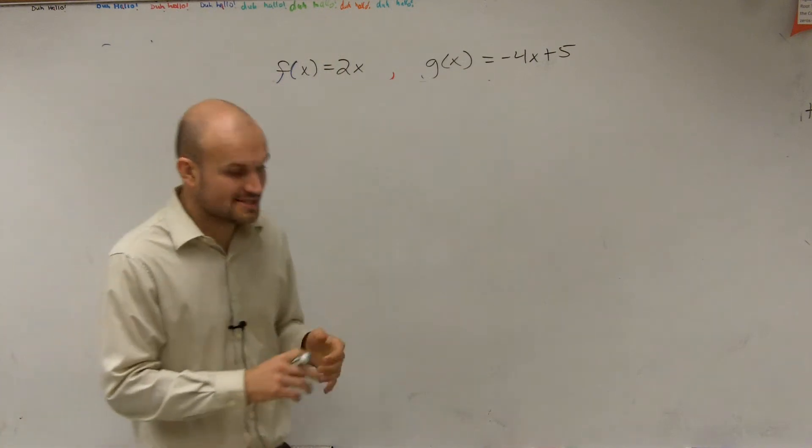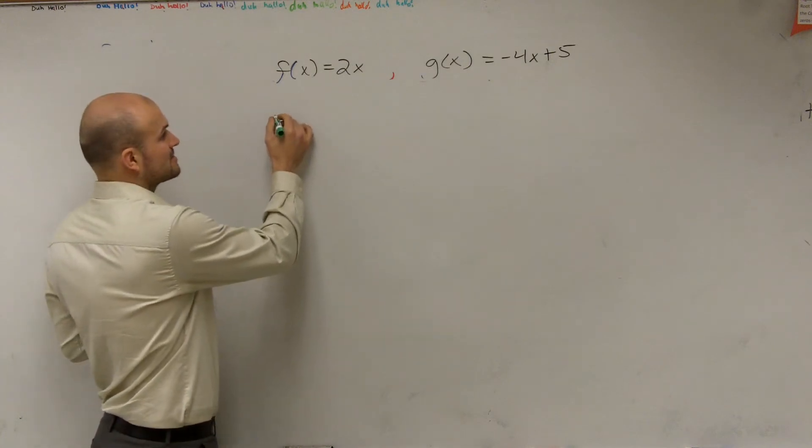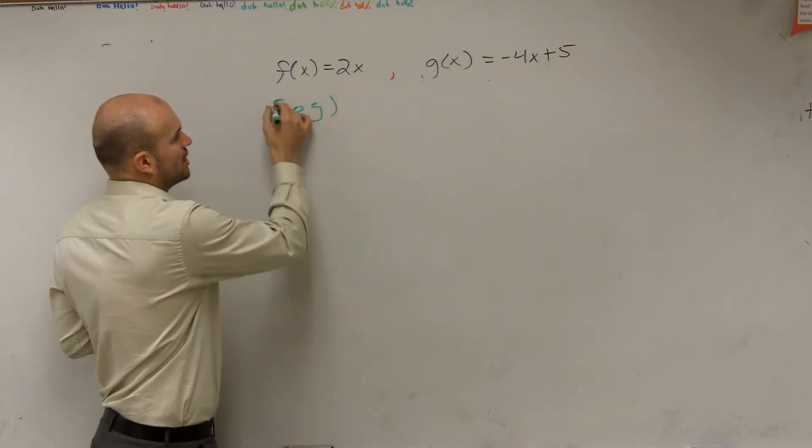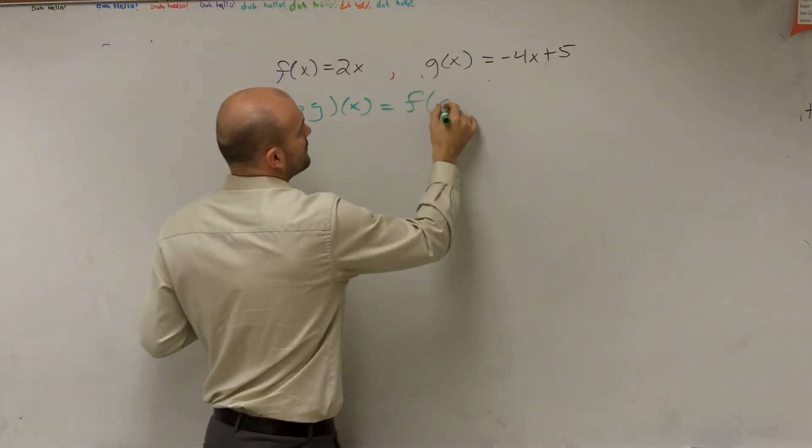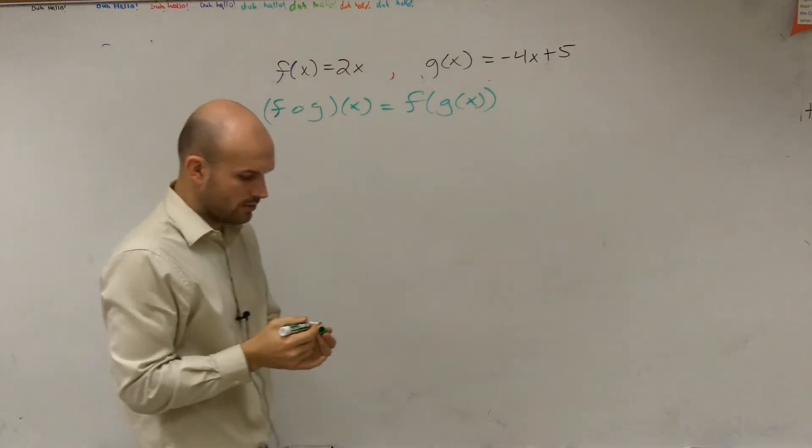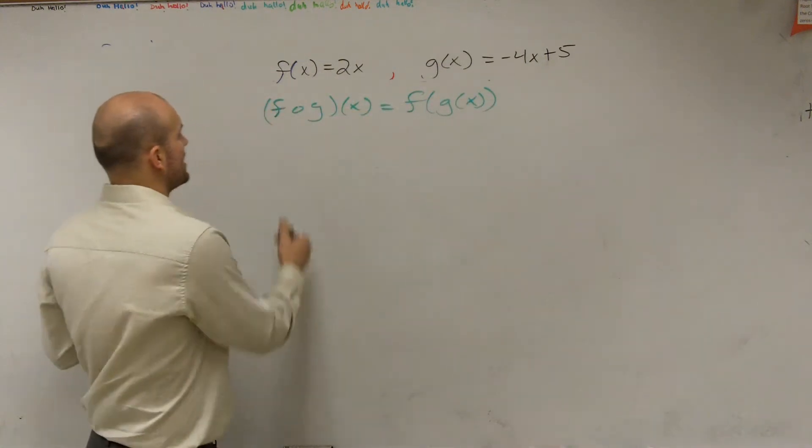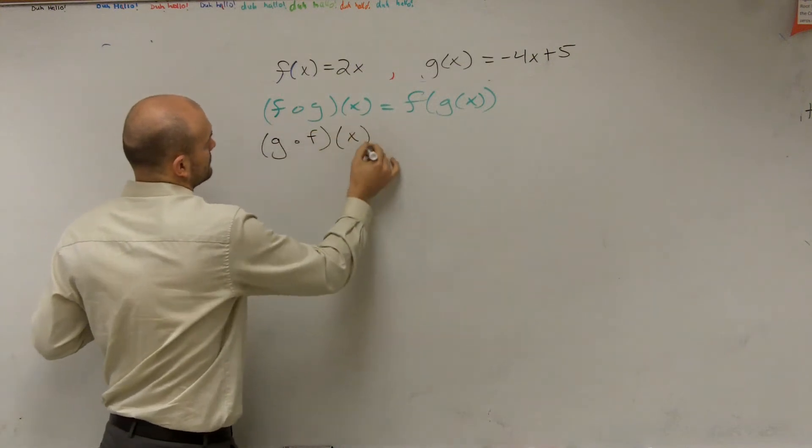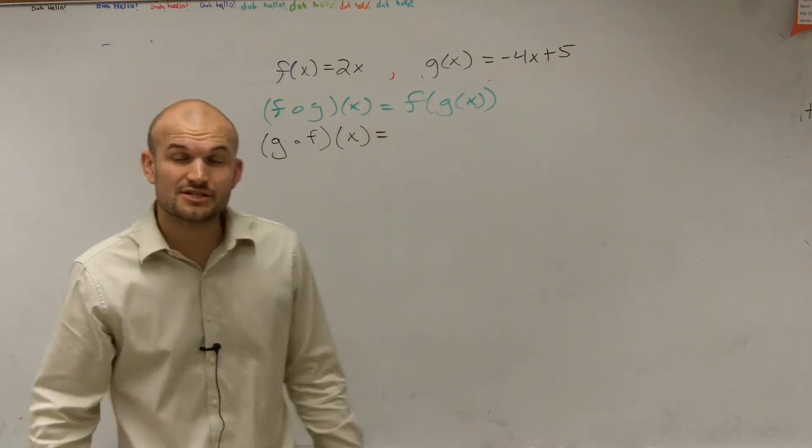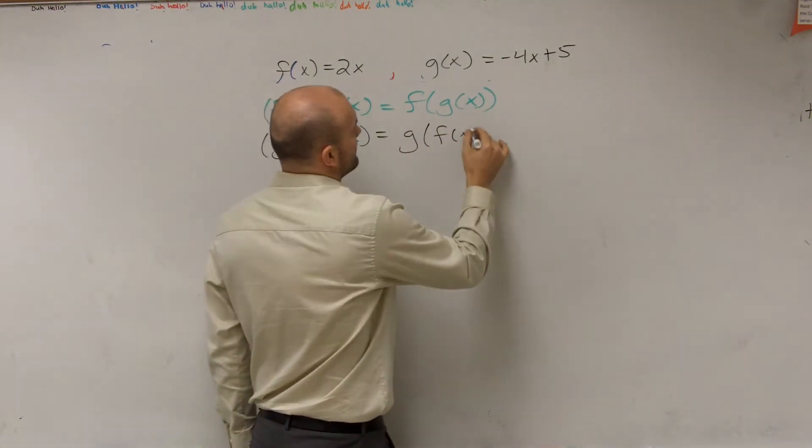All right, so the next thing, the last one we're going to work on is the last one we did, f of g of x, which we kind of called the fog, right? And what that represented was f of g of x. Well, now what we're going to do is we're going to rewrite that. We're going to switch it around. So what if I asked you now to find the composition of g of f? Well, ladies and gentlemen, that's just going to be switched around. That's going to be g of f of x.